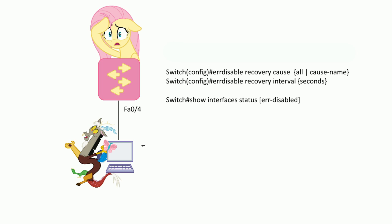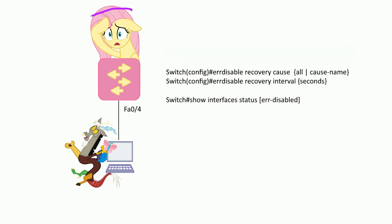In our scenario, we have Discord being up to no good. He's trying to flood this switch with a bunch of bogus MAC addresses. If we flood this switch and fill up the CAM table, we can effectively turn this into a hub and start sniffing traffic. Fluttershy is sick of this, so she configured port security on this port. By default, it will only allow one MAC address, and if there's more than that, it will shut down the port and put it in an error-disabled state.